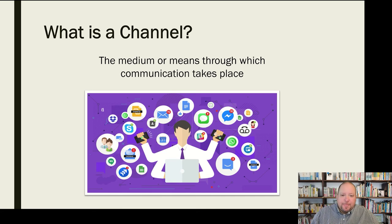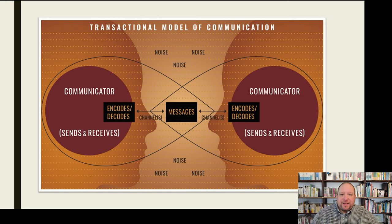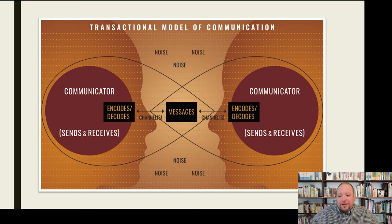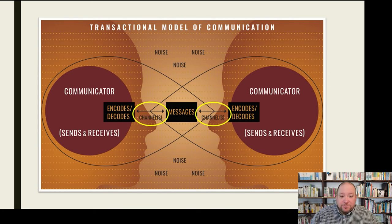If we look at this in the context of the transactional model of communication, which you see here in front of you, you have all the different elements — communicators A and B, noise, feedback, messages being sent back and forth — but there in the midst of it all are the channel or channels. The channel is how all of those things are taking place.